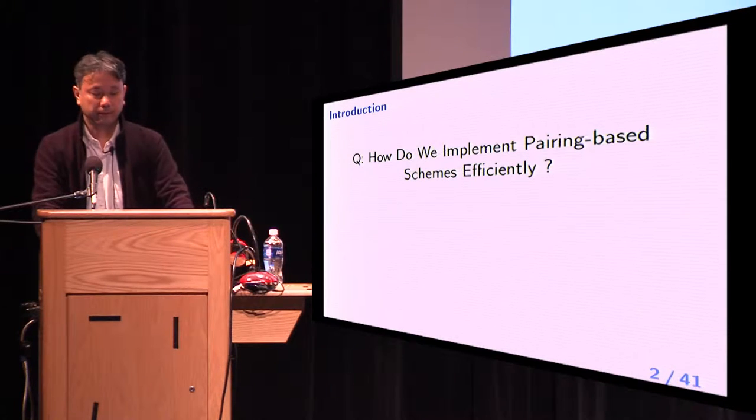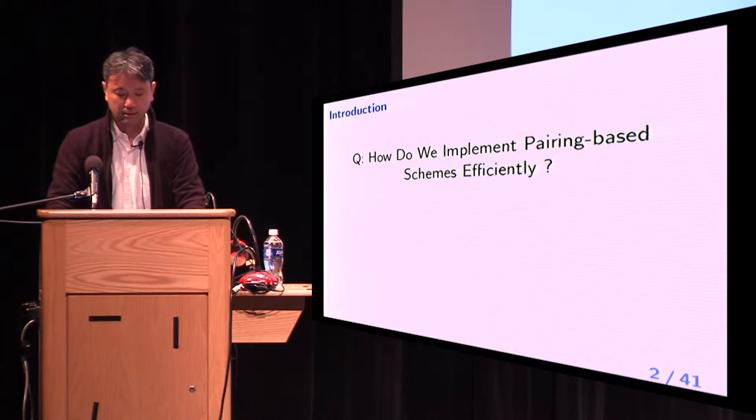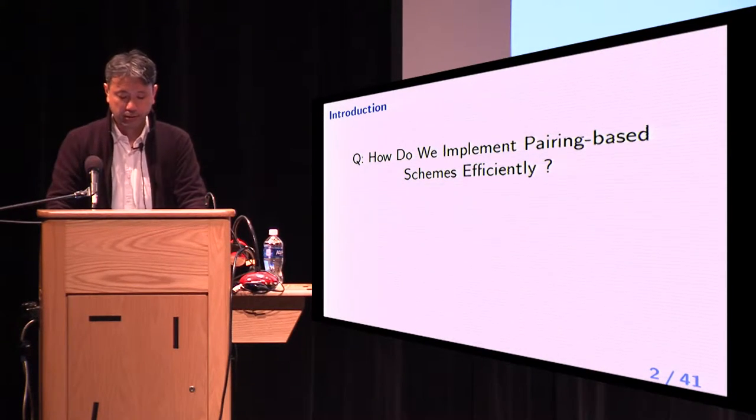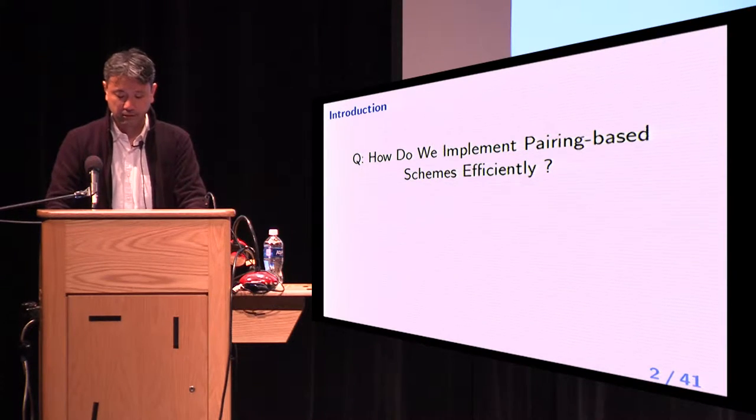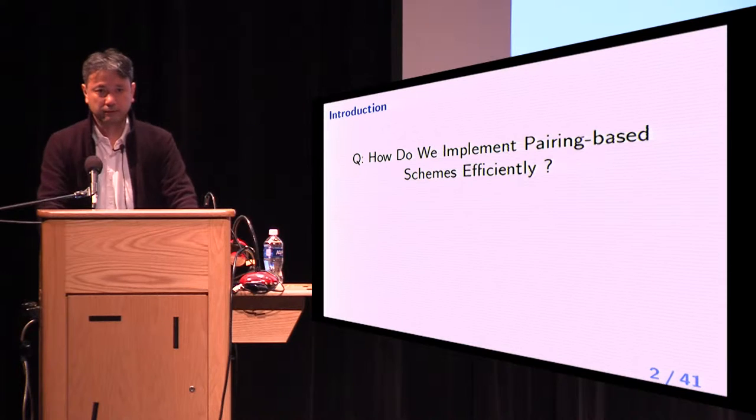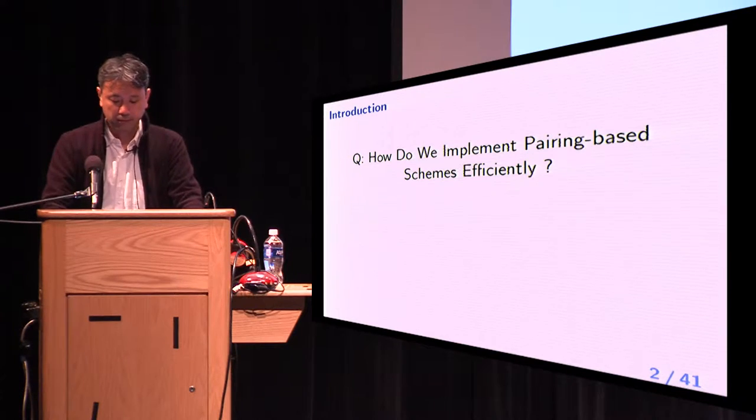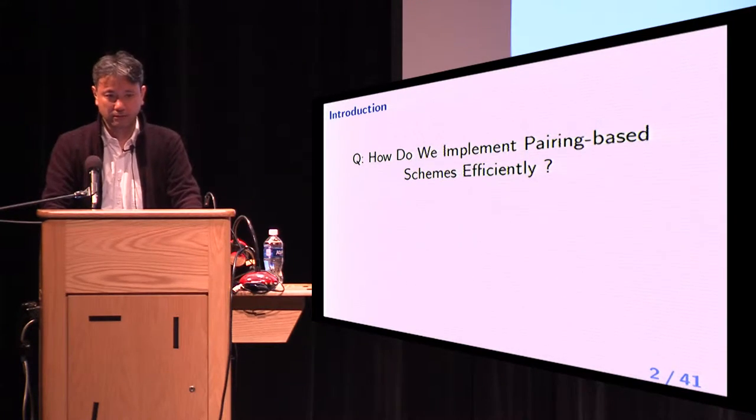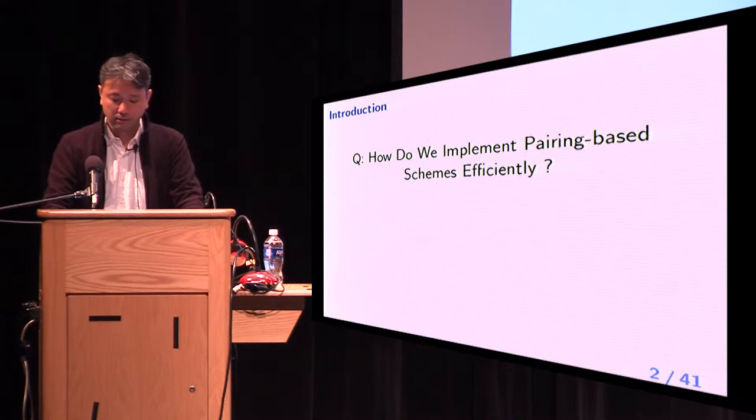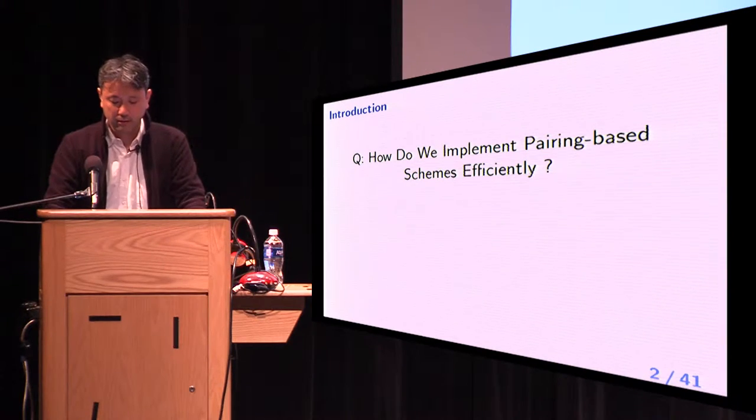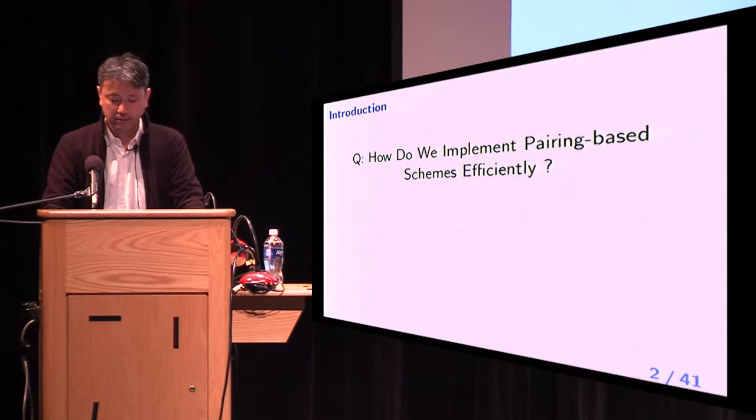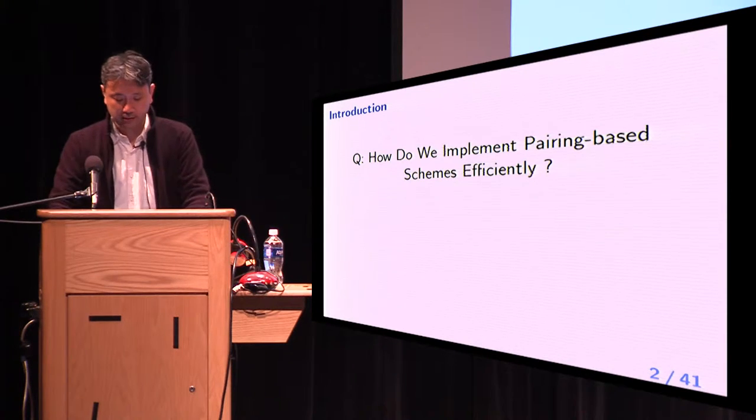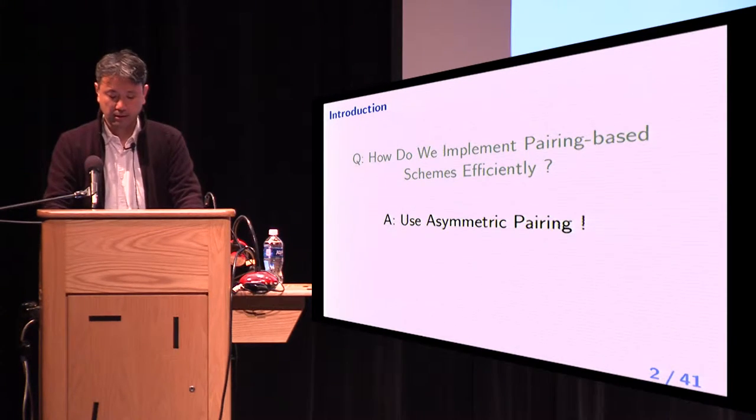First of all, I'd like to ask a question. How do we implement pairing-based schemes efficiently? Cryptographers who know implementation may answer using BN curve or KSS curve or ate pairing, twist and so on. Anyway, they will answer using asymmetric pairing.